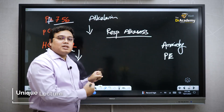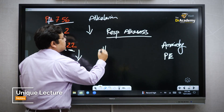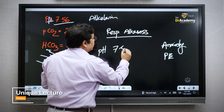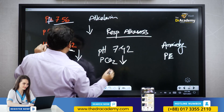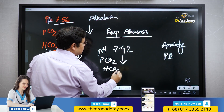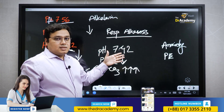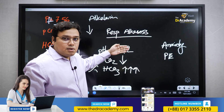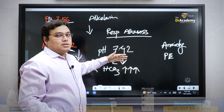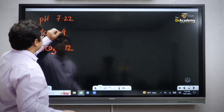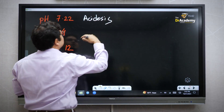Over time, the bicarbonate level drops to compensate the respiratory alkalosis. If the pH comes back to, say, 7.42 while partial CO2 is still low but bicarbonate has decreased to compensate, we call it compensated respiratory alkalosis.